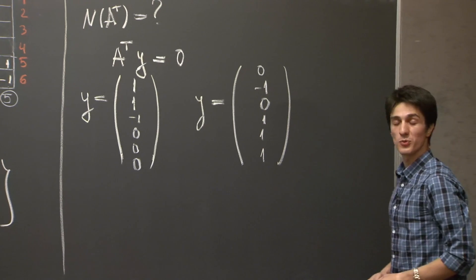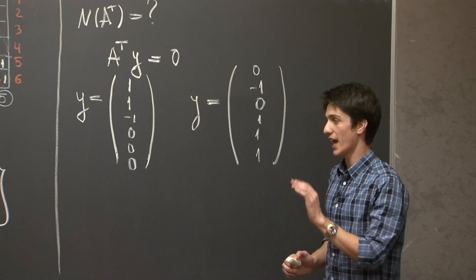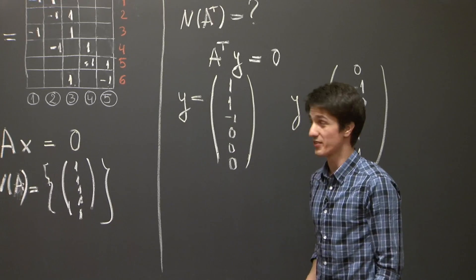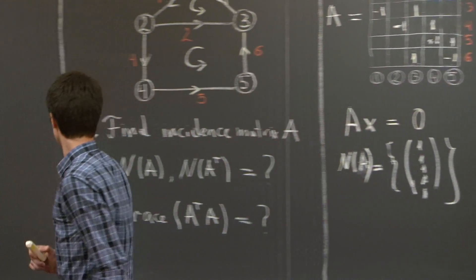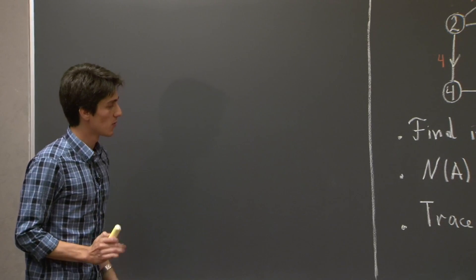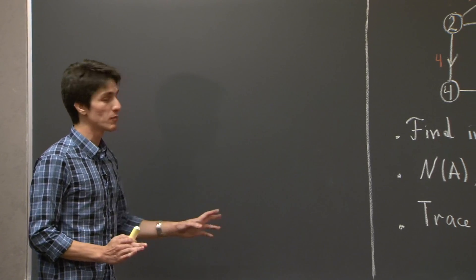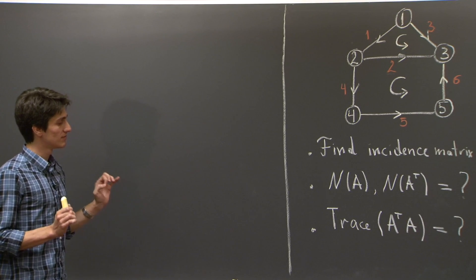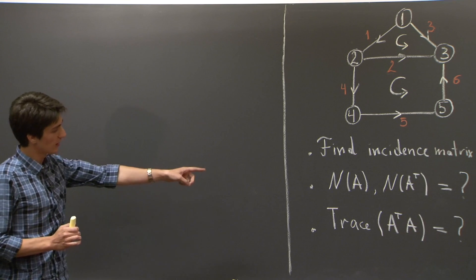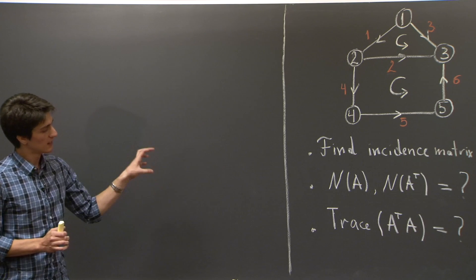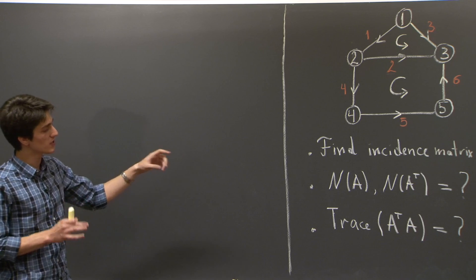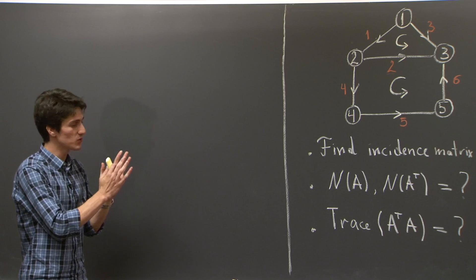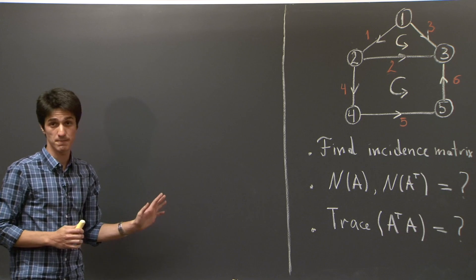So, we figured out what the null space of A transpose is. And now, let's concentrate our attention on finding the trace of A transpose A. I'm going to do it right here. So, the trace of a matrix is the sum of its diagonal entries. And we've seen this many times already,